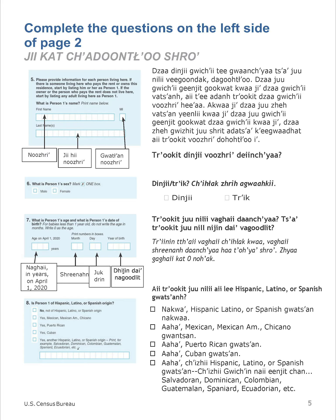Complete the questions on the left side of page 2. Do not write your answers on this guide. Please provide information for each person living here. If there is someone living here who pays the rent or owns this residence, start by listing him or her as person 1.